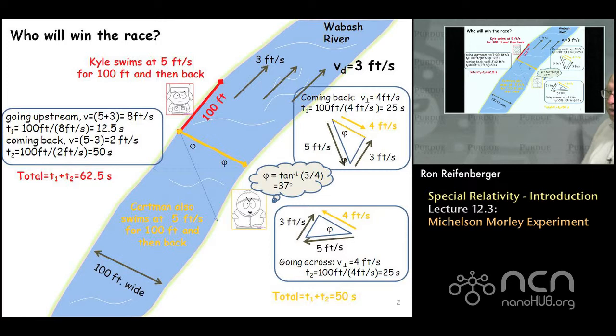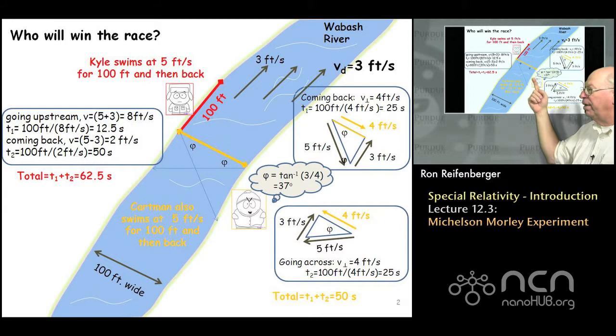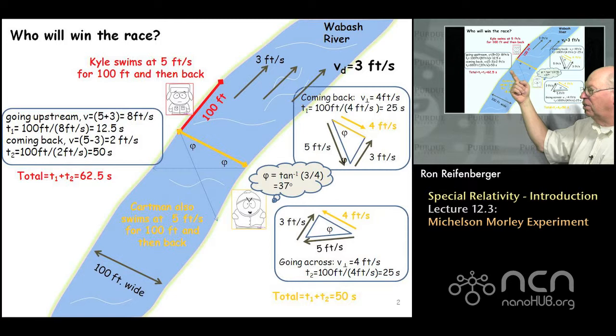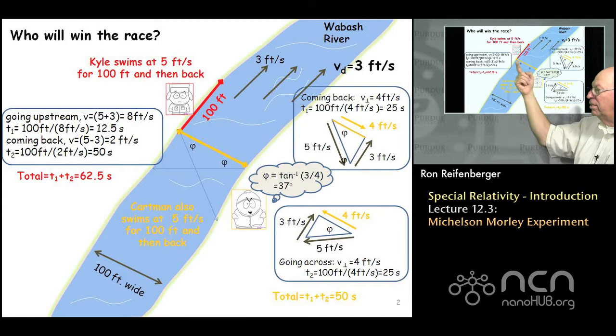Now that should be compared to the yellow swimmer who has to swim across the river and back. The yellow swimmer realizes that if he swims along a line perpendicular to the river bank, the drift velocity is going to push him way off course. So he calculates that he has to swim at an angle of about 37 degrees. If he swims at this angle of 37 degrees at 5 feet per second, combined with the drift velocity of 3 feet per second, he'll end up swimming the trajectory indicated by the yellow line.